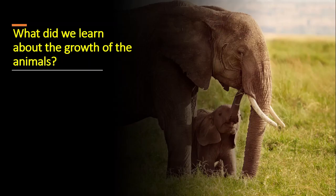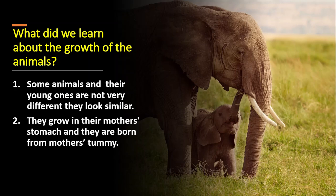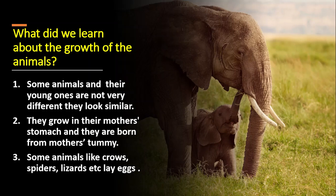I hope you have understood that the chick is born from the egg and you have seen the process. Now, what did we learn about the growth of animals? First point: some animals and their young ones are not very different — they look similar. Second point: they grow in their mother's stomach and are born from the mother's tummy. Third: some animals like crows, spiders, lizards, etc. lay eggs. We have understood these points from this first section.